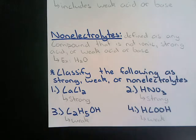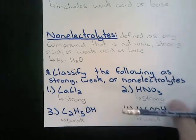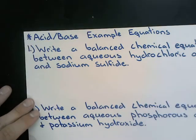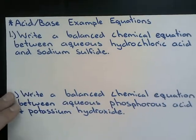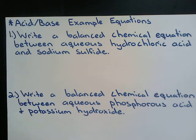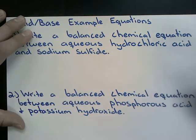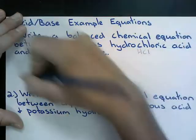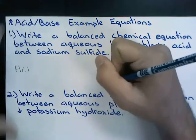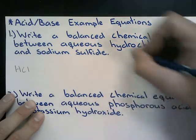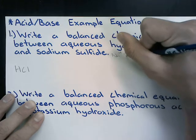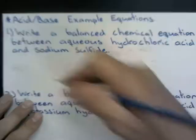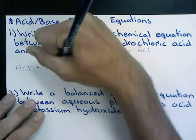Now we can move on to writing some acid-base example equations. We want to write a balanced chemical equation between aqueous hydrochloric acid and sodium sulfide. Hydrochloric acid has the formula HCl. Sodium has a Na 1+ charge, and sulfide has an S 2− charge, so sodium sulfide is Na2S (aqueous). They react together in a double replacement reaction, so the H and S combine, and H1+ with S2− forms H2S.